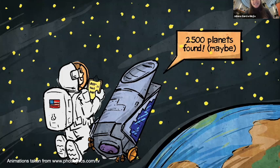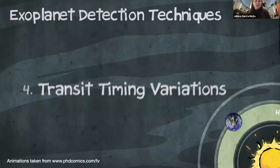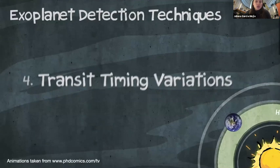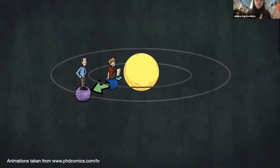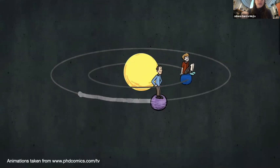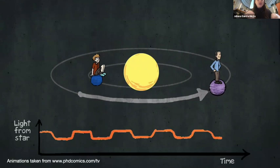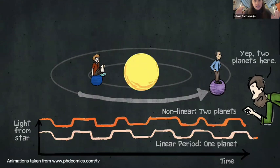We've gone through three techniques and still have two left. The fourth technique is called transit timing variation. We have the transit method, and there could be a second planet also orbiting in the system. That second planet can affect the orbit of the inner planet, causing the light curve to have wobbly, non-linear signatures rather than perfectly periodic ones. This tells you, without having seen the second planet, that there's a second planet in the system.